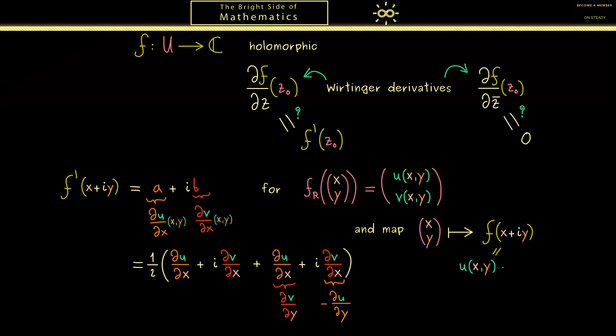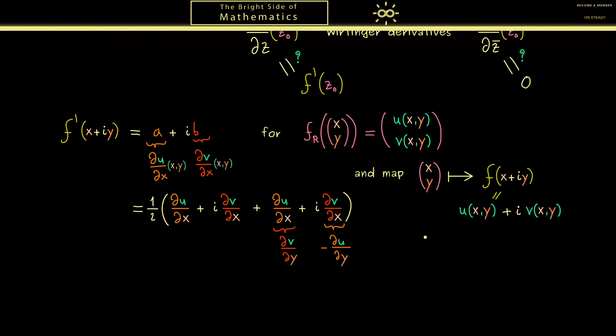And this helps us because this function we can write as u plus iv. And now you might already see on the left hand side we use exactly this. Here the first part we can write as the partial derivative with respect to x of u plus iv. And now in order to get this in the second part as well, you see we have to pull out a minus i. And when we do this you see we also have the partial derivative now with respect to y of u plus iv.